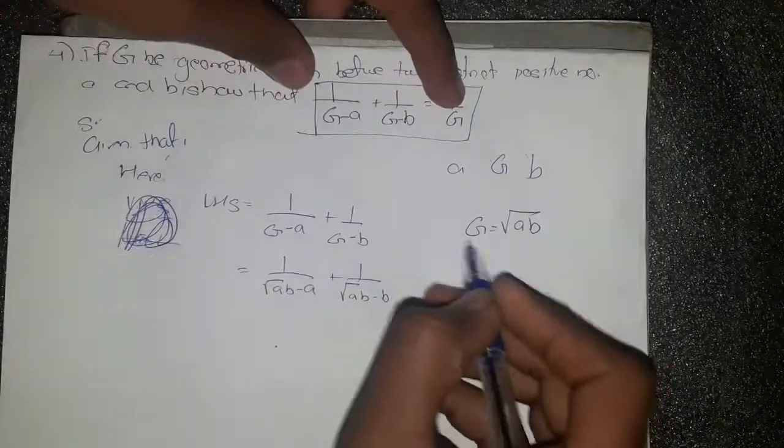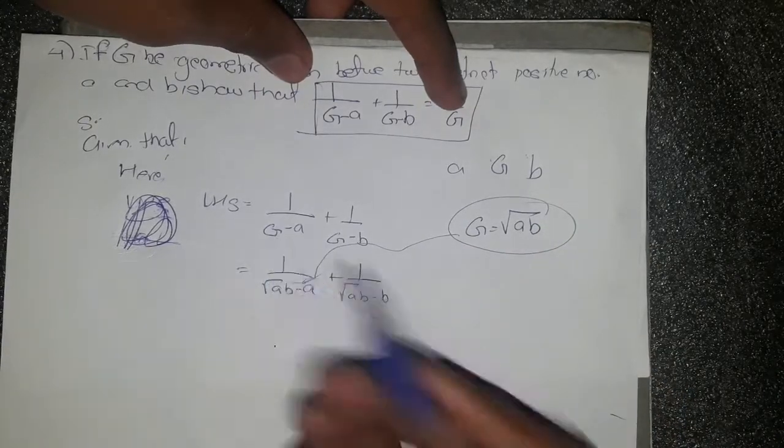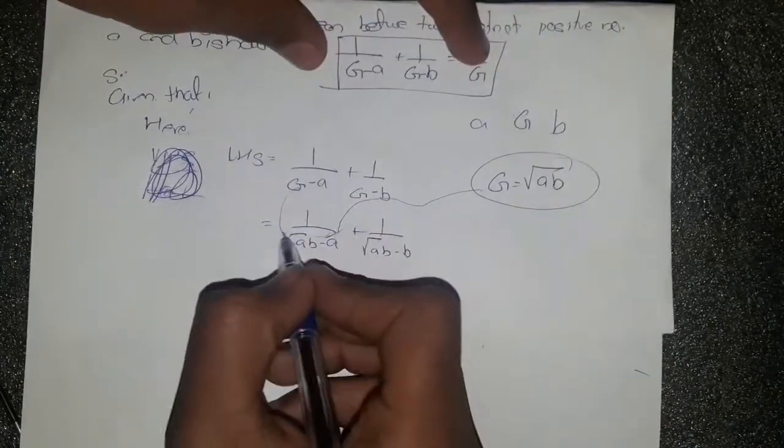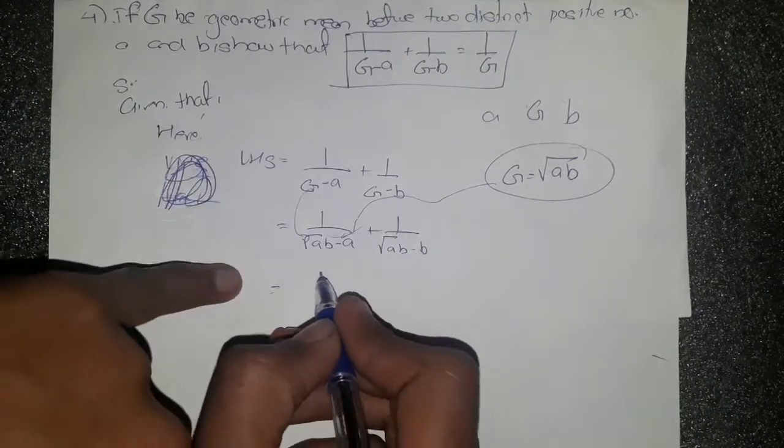Here we can see that G is equal to root under AB and we have brought this right here. G equals to root under AB, so we can write G equals to root under AB.